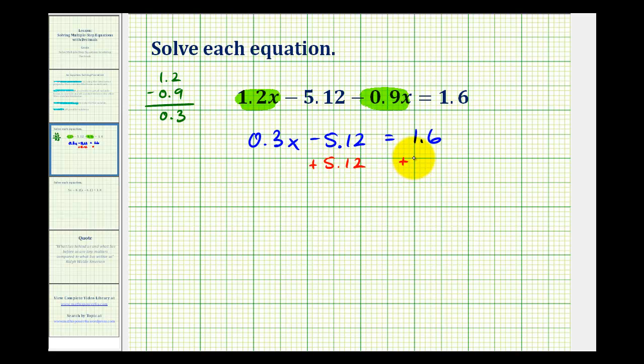So we'll make sure on the right side that we line up the decimal point, as well as the corresponding place values. So we'll have 0.3x minus 5.12 plus 5.12 is 0, that's why we did that. And then on the right side, we may want to put a 0 here in the hundredths place value, and then bring down the decimal point before we add. So we have 2, 7, and then 6. So now we have 0.3x is equal to 6.72.